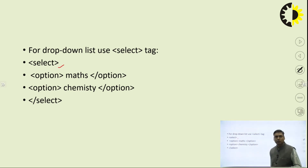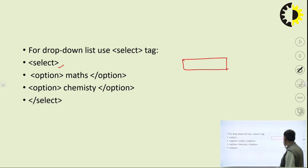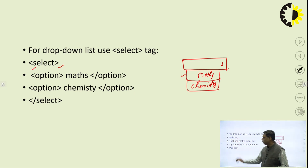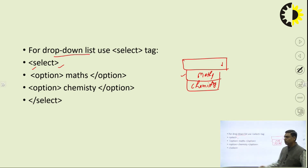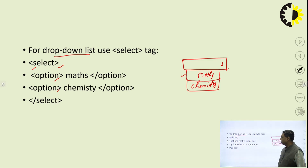Next, with the select tag, you can display many options to the user, and the user can select one or multiple options — it works like a dropdown menu. When you click, it will display options such as Maths or Chemistry. The select tag starts the dropdown list, and for each option you want to give, you use the option tag.